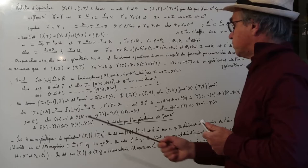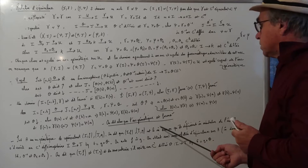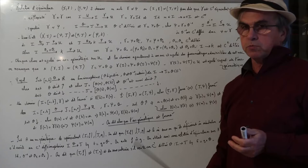On dit alors que l'arc géométrique est fermé, c'est-à-dire que quelle que soit la représentation admissible de cet arc géométrique, on a une représentation fermée.